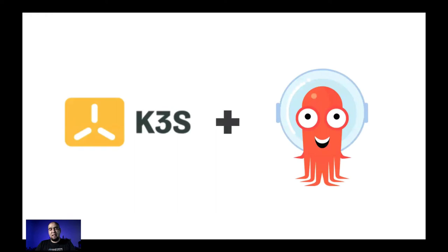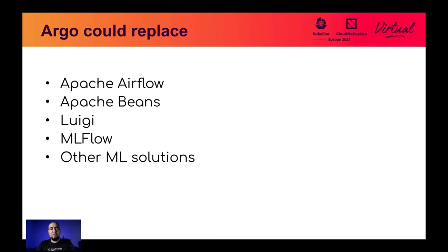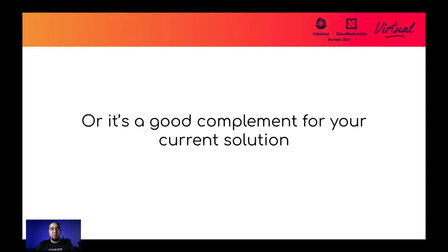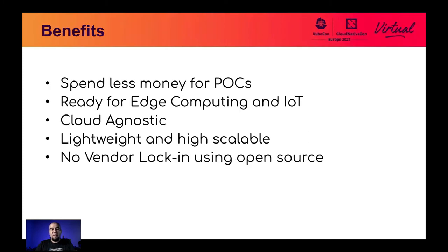You can use K3S as a lightweight environment plus Argo on the edge or for POCs. Argo could replace Apache Airflow, Luigi, MLflow, or other ML solutions like SageMaker, or it could complement your current solution. The benefits are spending less money for POCs — instead of a full cluster, why not a virtual machine with K3S? K3S and Argo are prepared for edge computing and IoT, cloud-agnostic, lightweight, highly scalable, and with no vendor lock-in because they are open source.